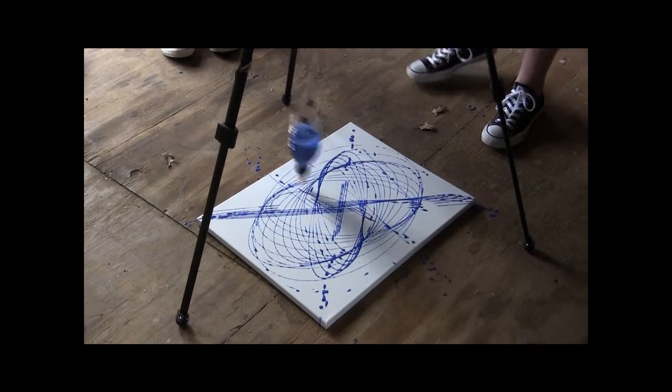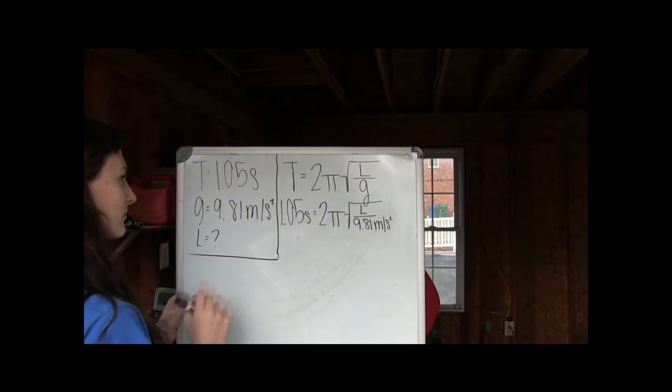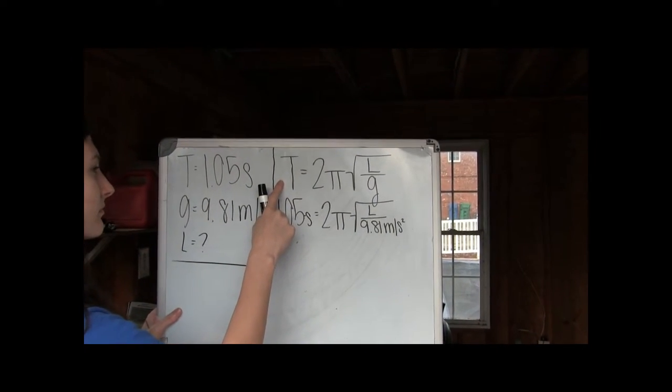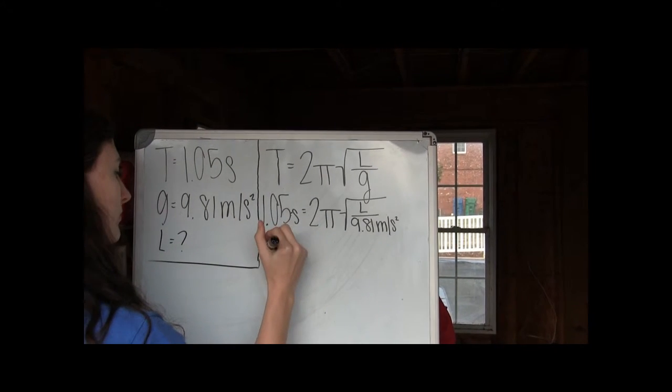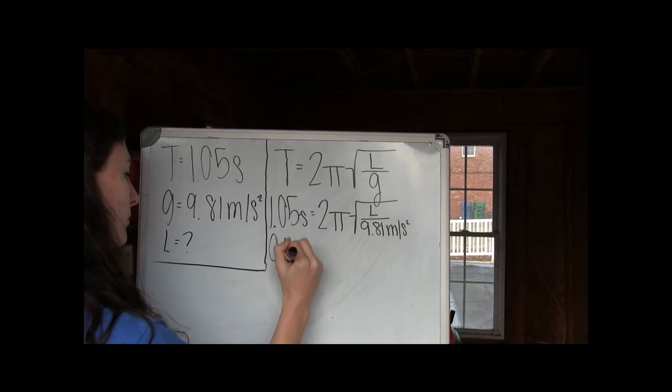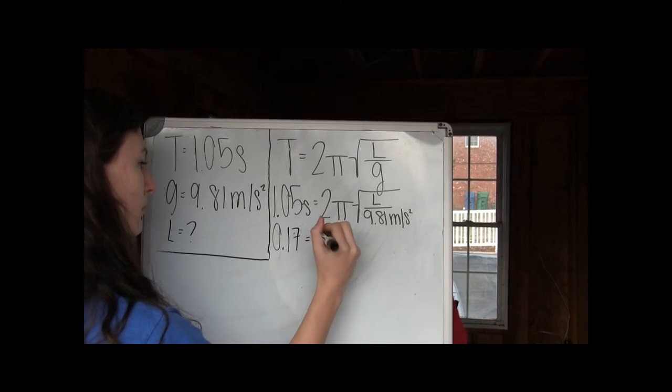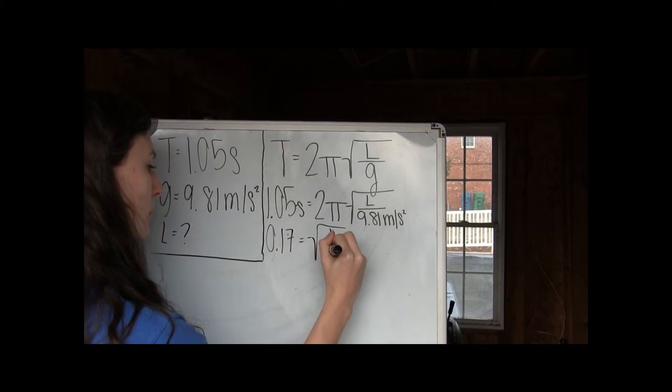Alright, did you stop? The equation for a pendulum is T = 2π√(L/g). We will be finding the length. The time we reported is 1.05 seconds, and gravity on earth is 9.8 meters per second squared.